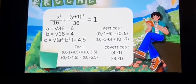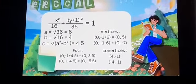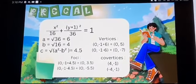The co-vertices should be at 4, negative 1, and negative 4, negative 1.